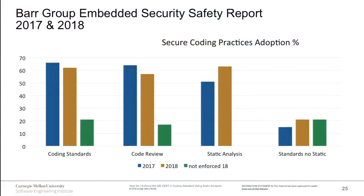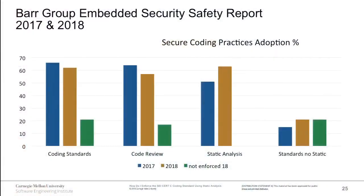A survey from the BSIMM group shows practices developers are using, comparing 2017 and 2018 reports. The data tracks how many use coding standards, peer code review, static analysis, and standards without static analysis. An interesting gap exists between people using coding standards and those running static analysis tools — especially in the 2017 data. If you're not doing static analysis to enforce your coding standard, you're doing it by hand through peer review.